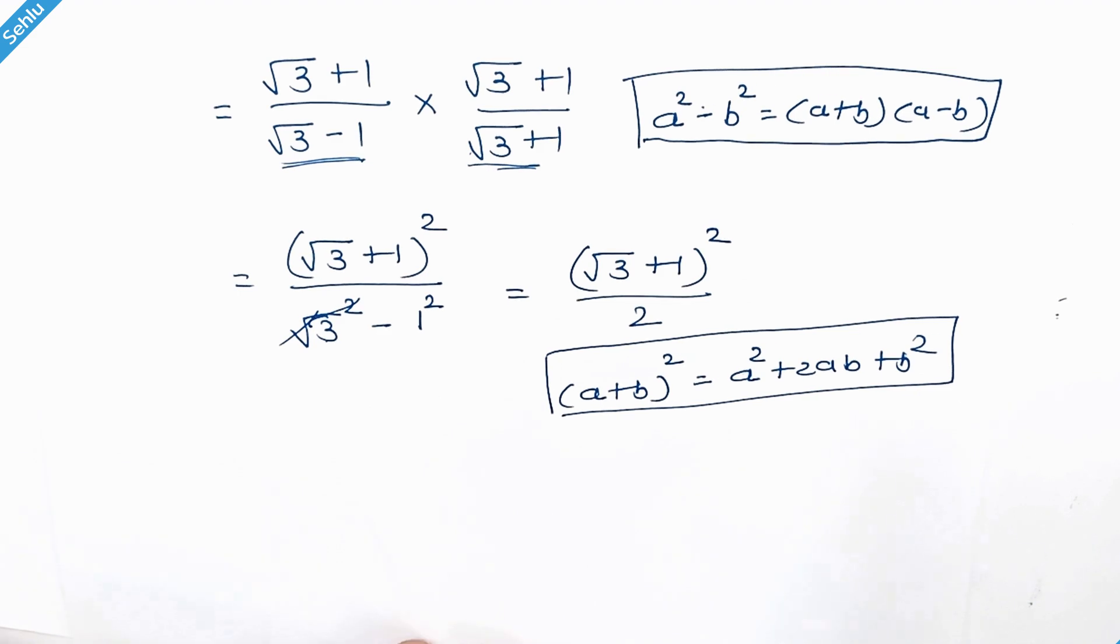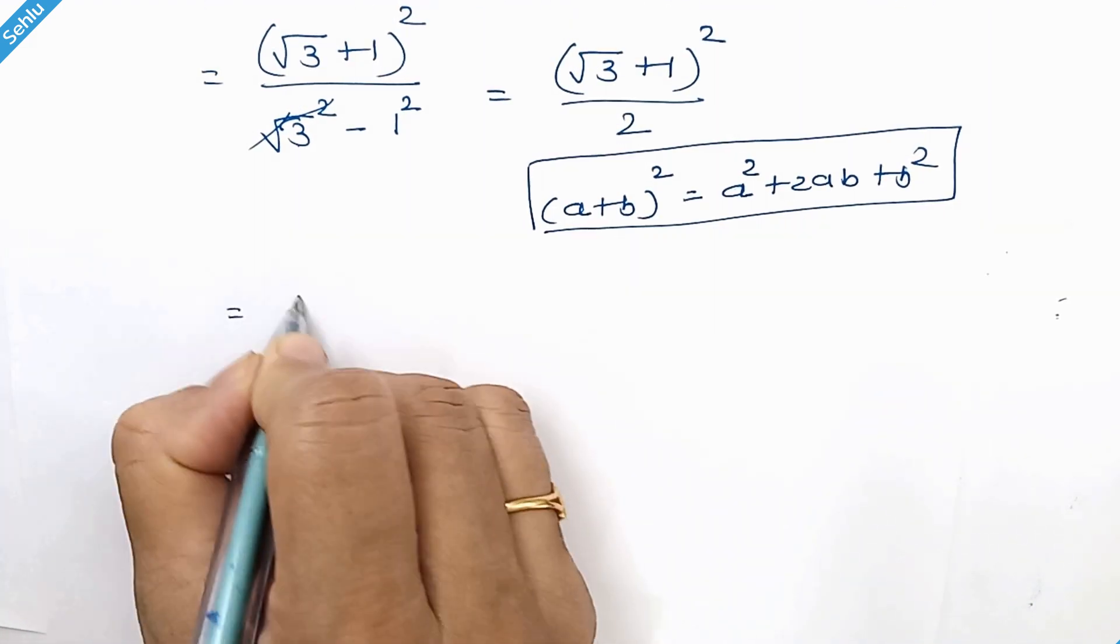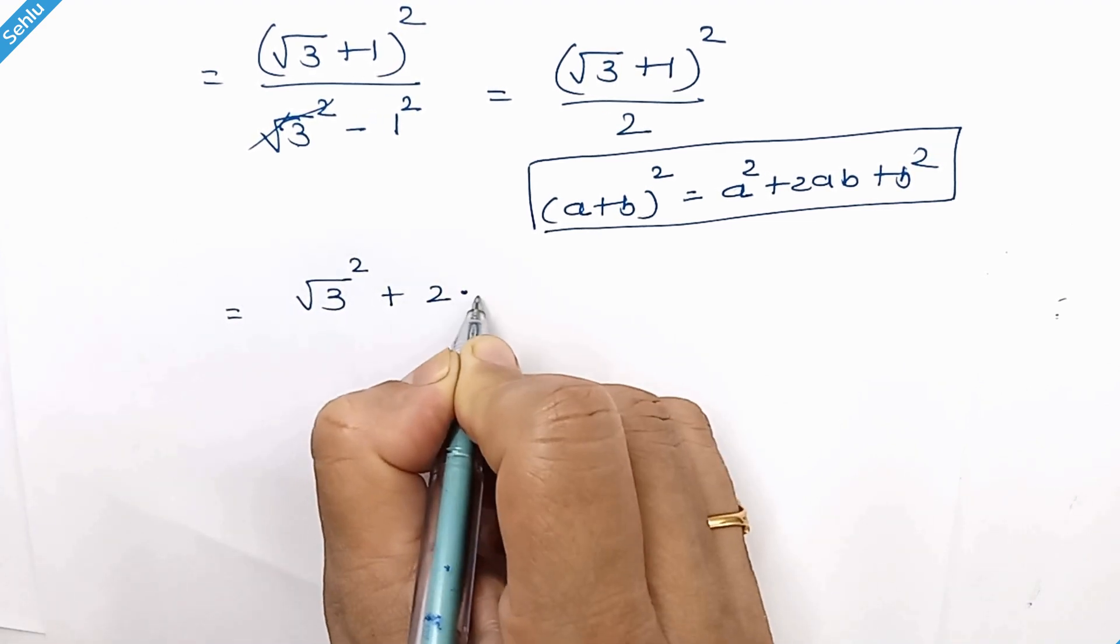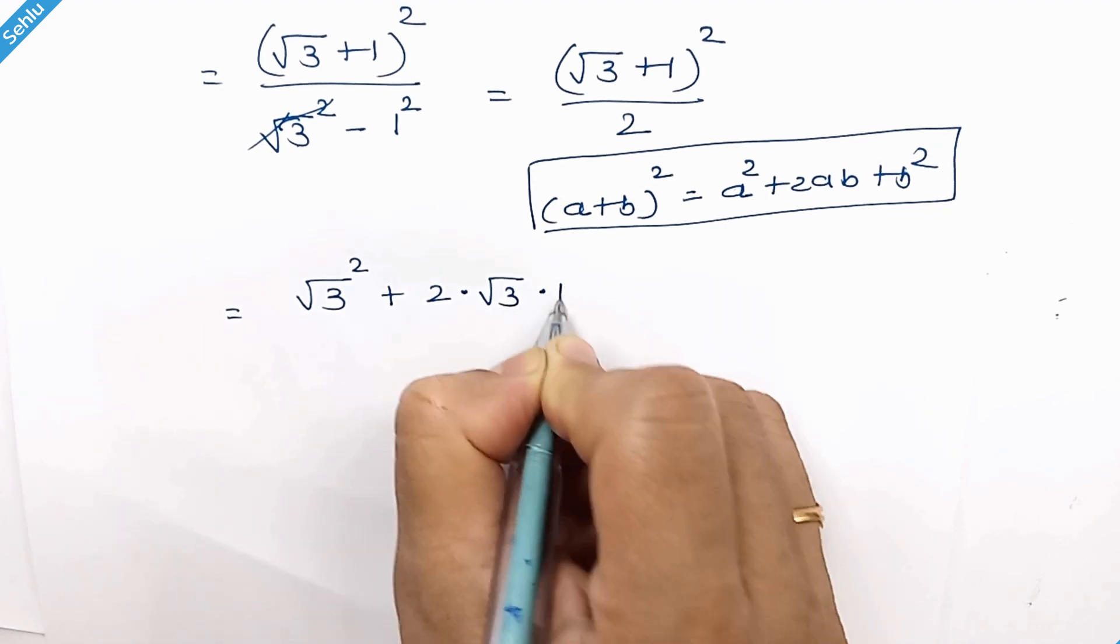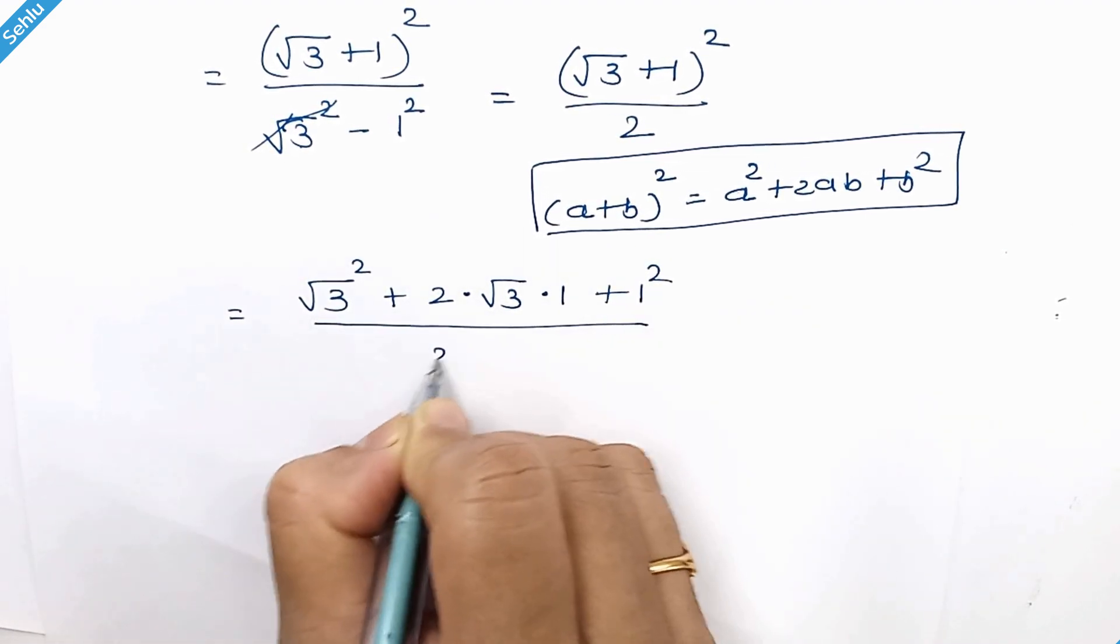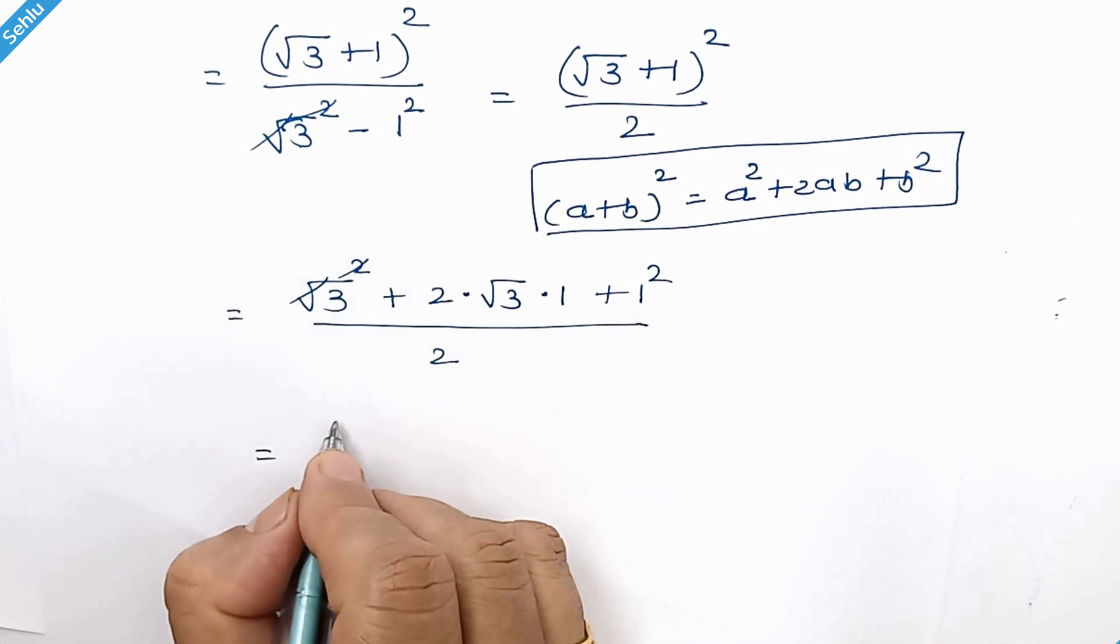So our next step will be square root 3 squared plus 2 times square root 3 times 1 plus 1 squared over 2. Here we have square root 3 squared, this becomes 3, and 3 plus 1 is 4.